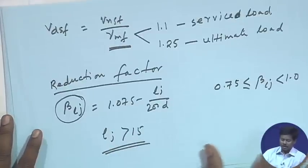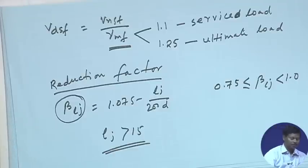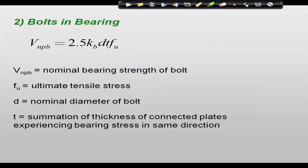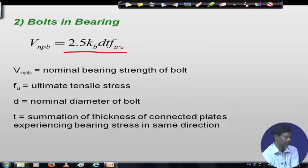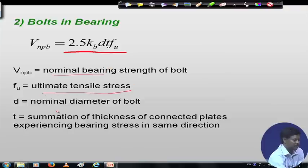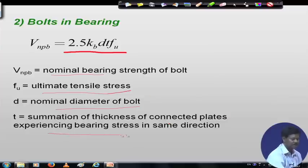In case of HSFG bolts we also consider bearing failure, calculated the same way as for bearing type bolts. V_NPB = 2.5 × KB × D × T × FU, where V_NPB is the nominal bearing strength, FU is the ultimate tensile stress of the plate, D is the nominal diameter of the bolt, and T is the summation of thickness of connected plates experiencing bearing stress in the same direction.